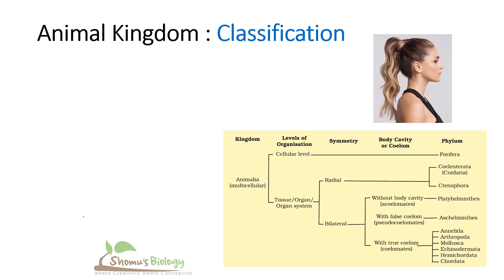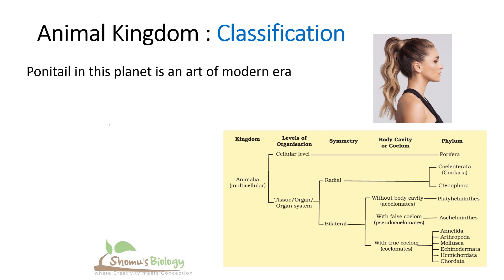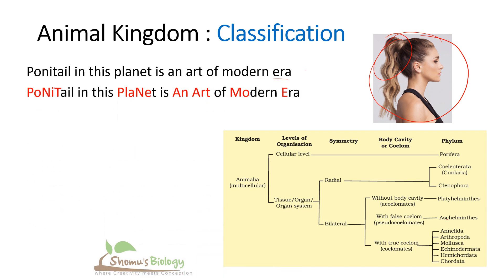The first thing we want to talk about is the classification hierarchy. From Porifera all the way to Chordata, there are many different phylums for invertebrates. Animal classification always starts with this particular sentence — if you remember this sentence, you can recall all the different phylums of invertebrates. You need to know this picture: 'Ponytail in this planet is an art of modern era.'